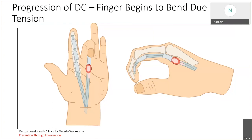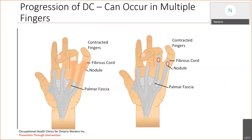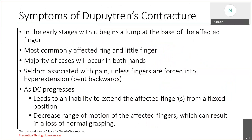The finger starts to bend due to this tension that's created. As you can see, it could affect multiple fingers, which includes your little finger and the ring finger usually. Usually Dupuytren's Contracture is bilateral, so it happens in both hands.